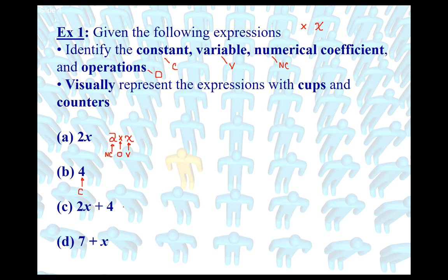For part c, 2x plus 4, expanded: 2 times x plus 4. The variable is x (V). The plus symbol is an operator (O), and the multiplication symbol is also an operator (O). The 2 is attached to the variable through multiplication, so that is a numerical coefficient (NC). The 4 is separated from the variable through addition, so it is a constant (C).